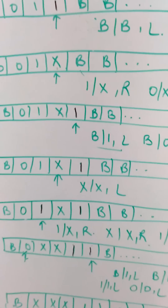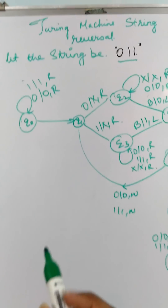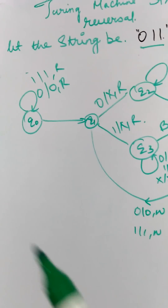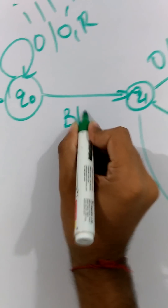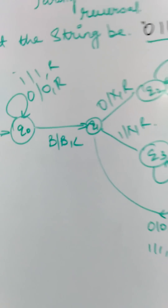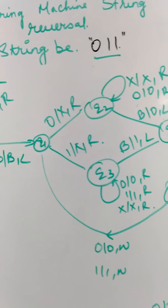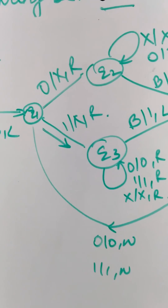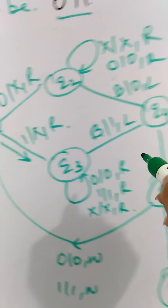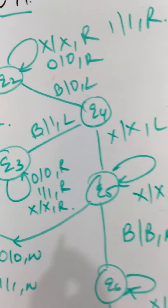Now let us see the transition diagram. This is the transition diagram and let us see how it works. First we have 0 as input, it will stay at Q0. Here it should be a blank replaced with blank and move left. So it will first find the blank space, then move to left. After that it will look for the last input, which is 1. Then it will move in this direction and replace 1 with x. Then again it will move to the right, find the blank space, and replace that blank space with 1.